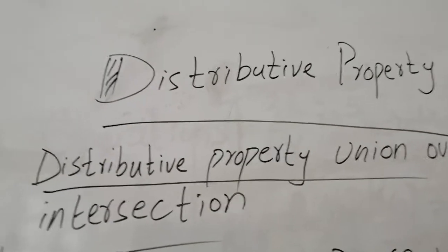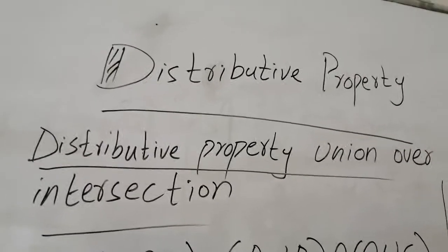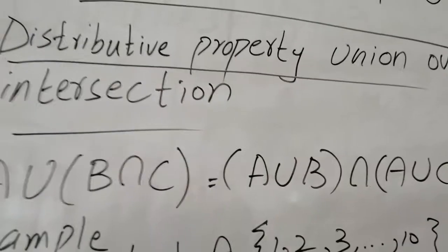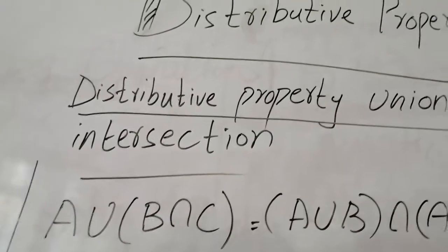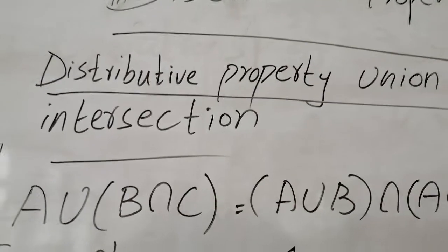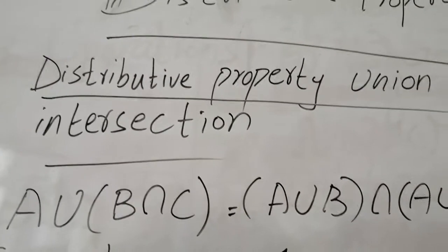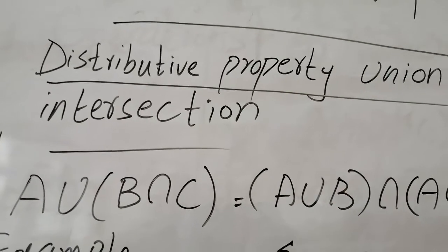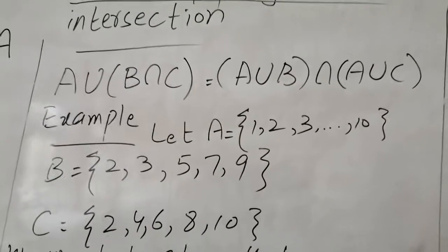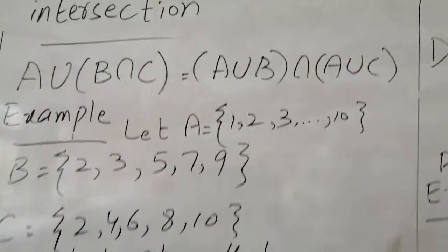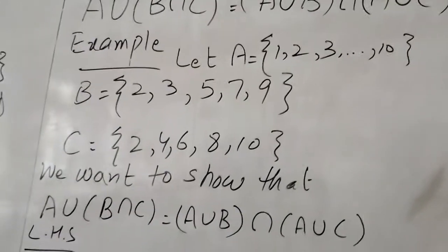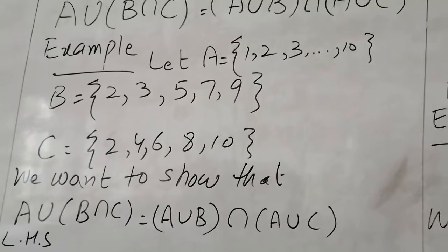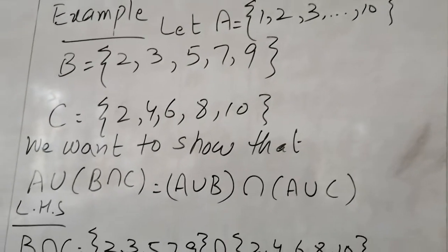Now we discuss the distributive property, which has two types. First is distributive property of union over intersection: A union (B intersection C) equals (A union B) intersection (A union C). The idea is that A union is distributed into the bracket — A union goes with B, and A union goes with C, and the results are combined with intersection.